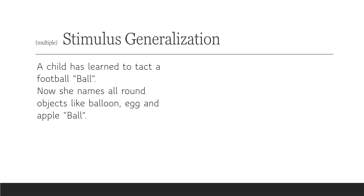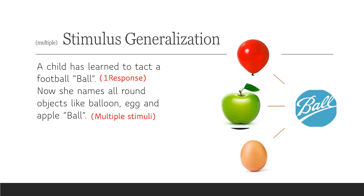Another example: a child has learned to identify a football as a ball. Now she names all round objects — like a balloon, egg, and apple — 'ball.' How many responses and how many stimuli do we have? We have one response, which is saying 'ball,' and multiple stimuli: the balloon, egg, and apple. Again, one response — saying 'ball' — and multiple stimuli: balloon, apple, and egg.